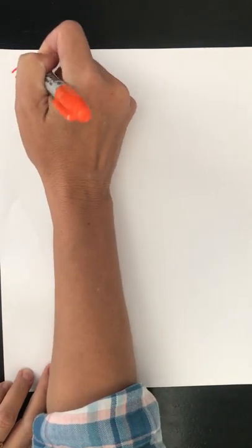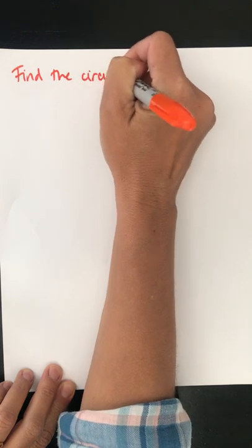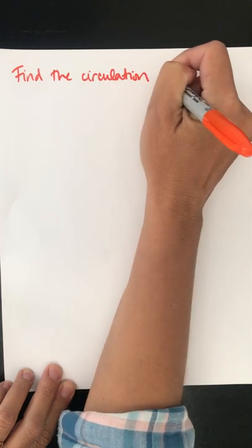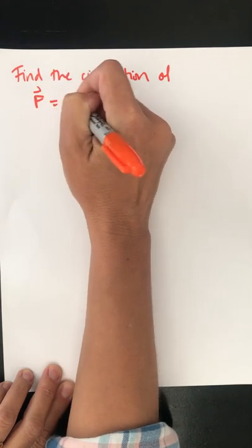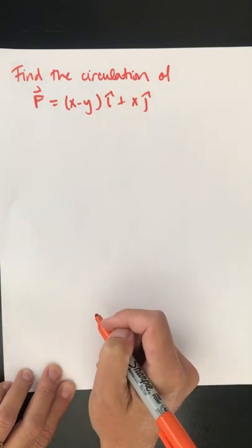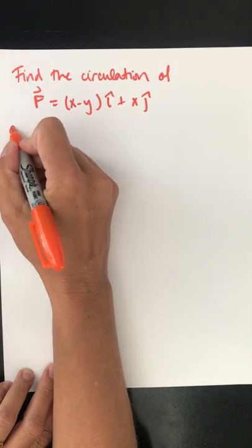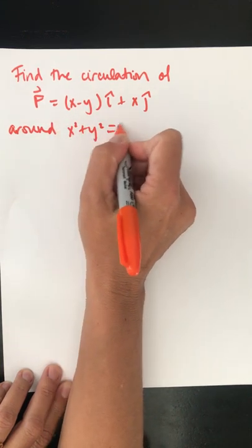So let's find the circulation of a vector field. Let's say our vector field is x minus y i-hat plus x j-hat. And I want to find this circulation around x squared plus y squared equals 1.